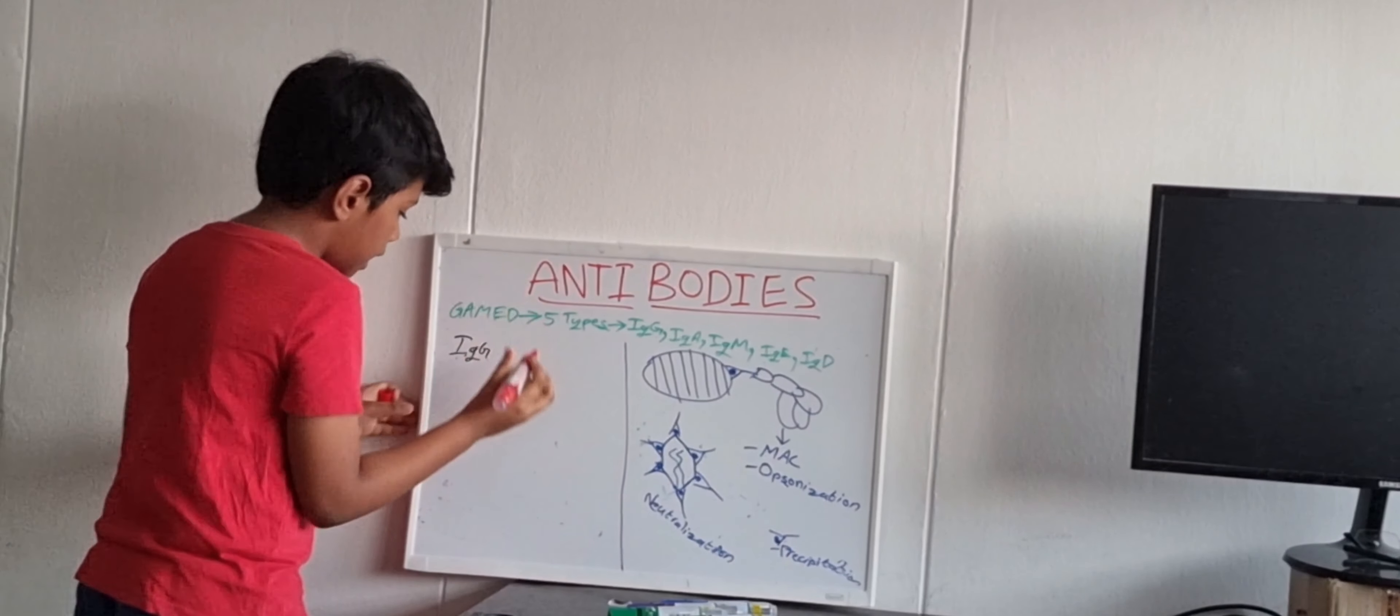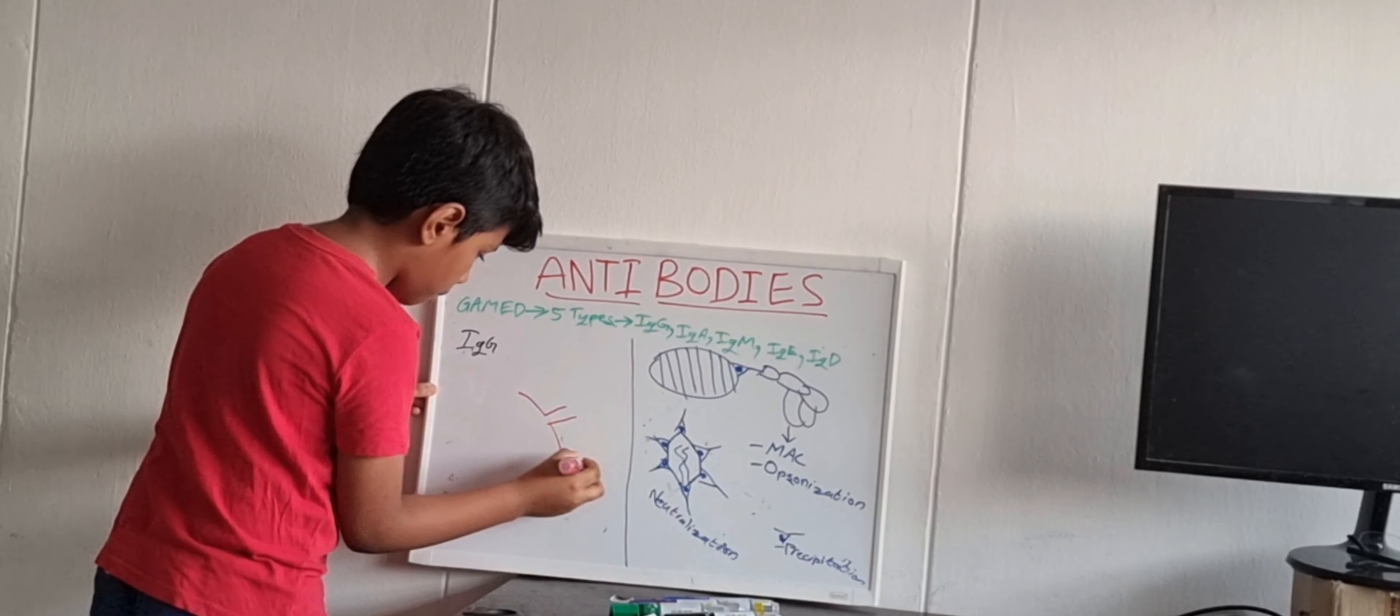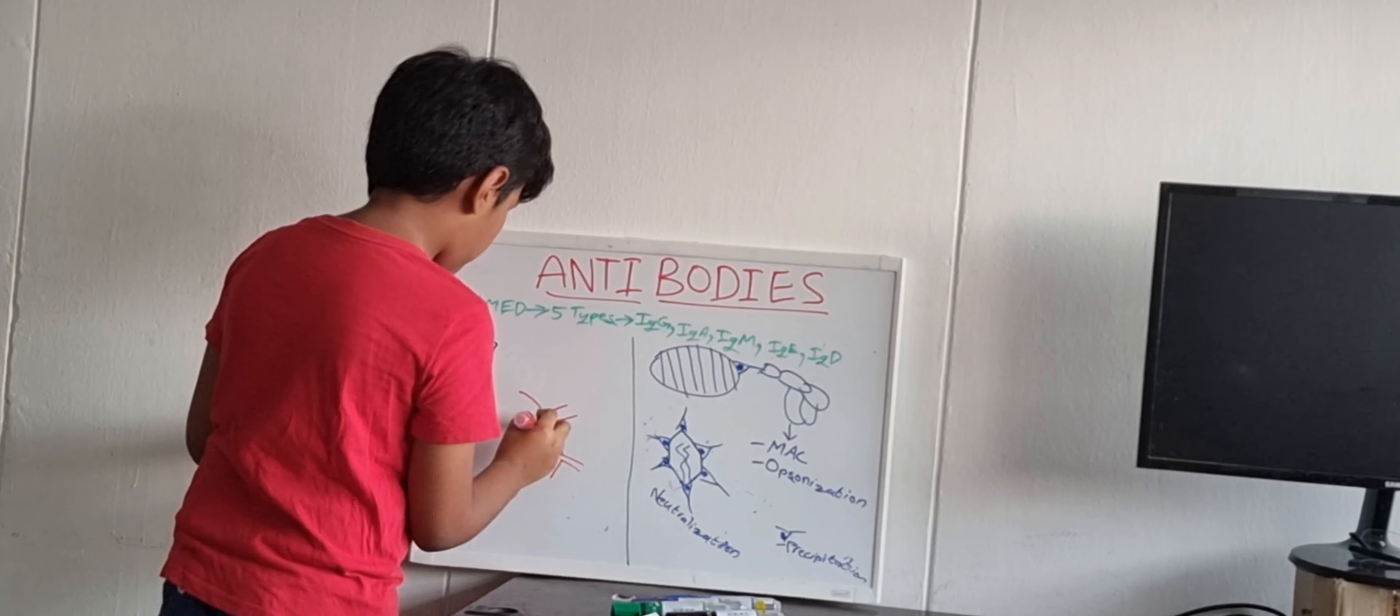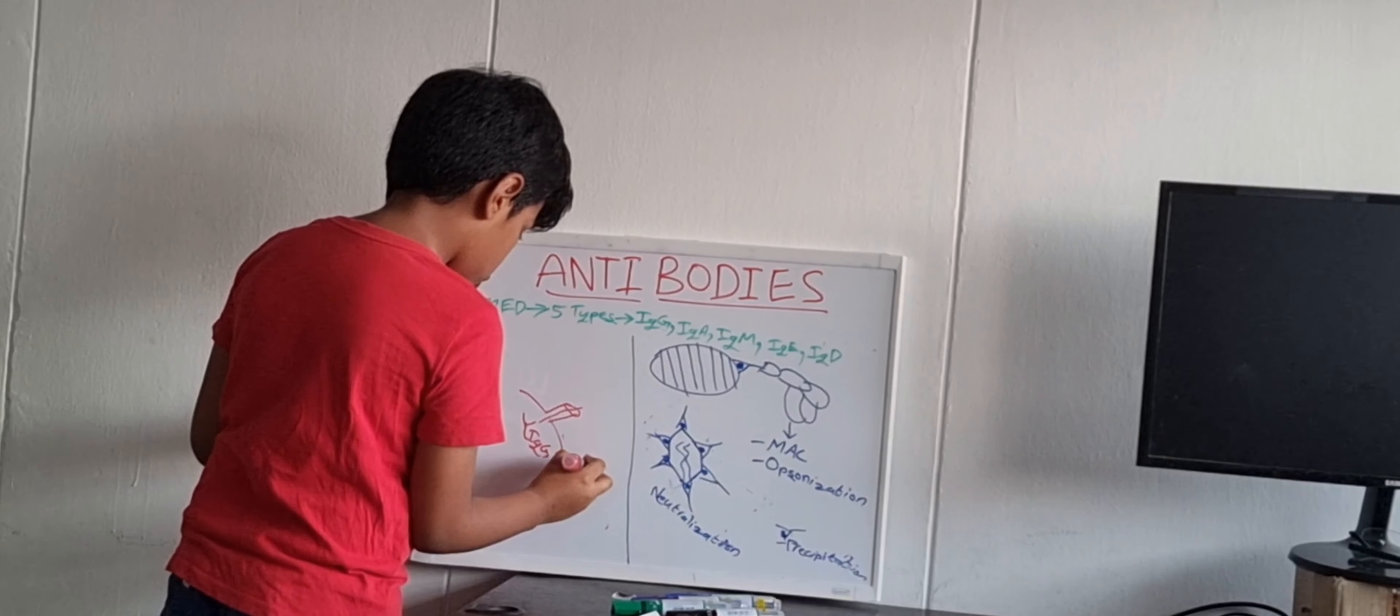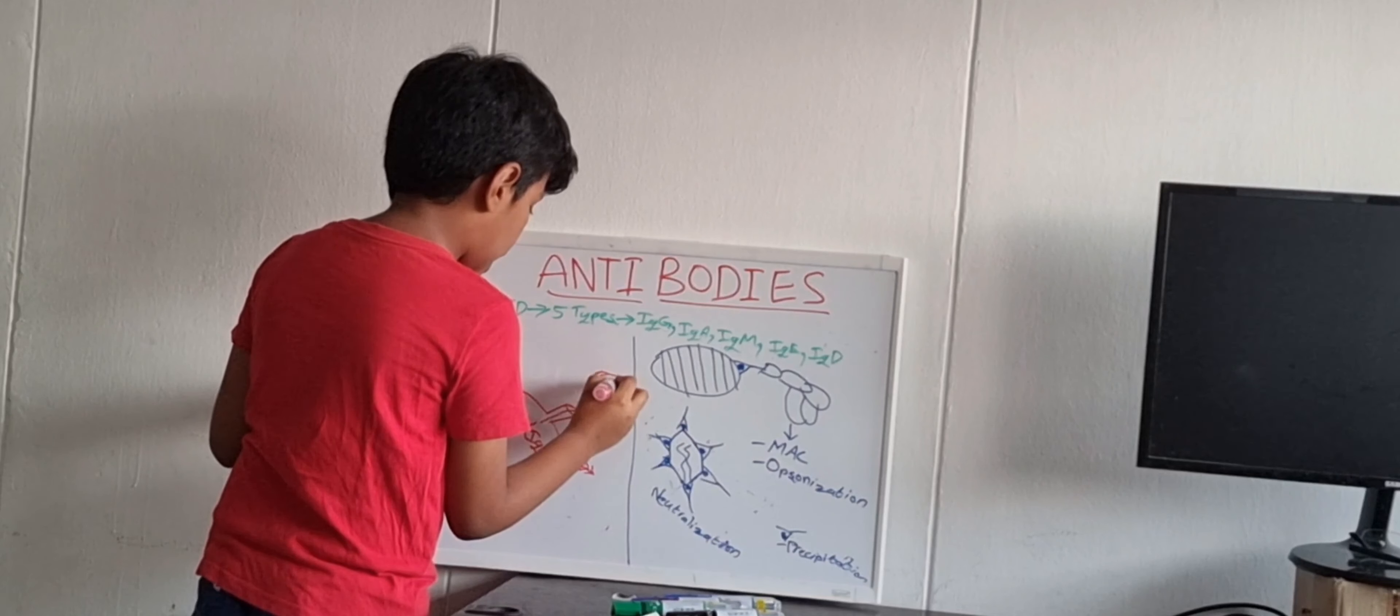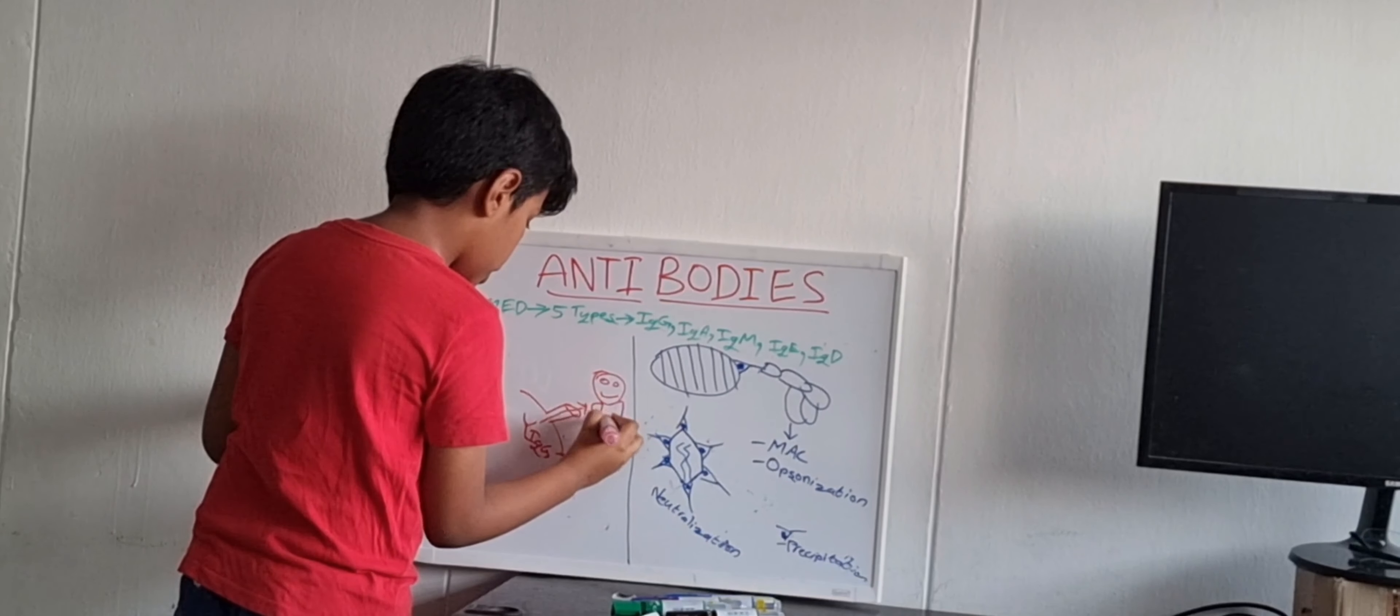Now, I will erase this part. So, now I will draw a placenta. This is the placenta. And let me say that here are some kind of blood vessels coming from the placenta. And these IgG antibodies can pass. And where does it go? To the baby. It goes to the baby. And the baby will have some little immunity. It will have some little immunity inside it.